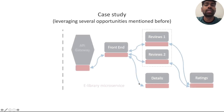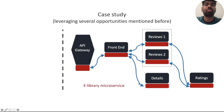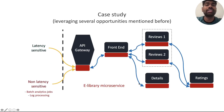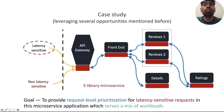We now showcase a study which leverages several of these opportunities. Consider an e-library microservice as shown here. This application services two different kinds of workloads: latency-sensitive and non-latency-sensitive. Latency-sensitive traffic, for example, may include users traversing a website or streaming media. Non-latency-sensitive traffic, on the other hand, includes background jobs like batch analytics or log processing. The goal of our prototype is to provide request-level prioritization for latency-sensitive requests throughout this microservice application, serving a mix of workloads, by leveraging the capability of the sidecar to do cross-layer coordination with very minimal coupling with the application.